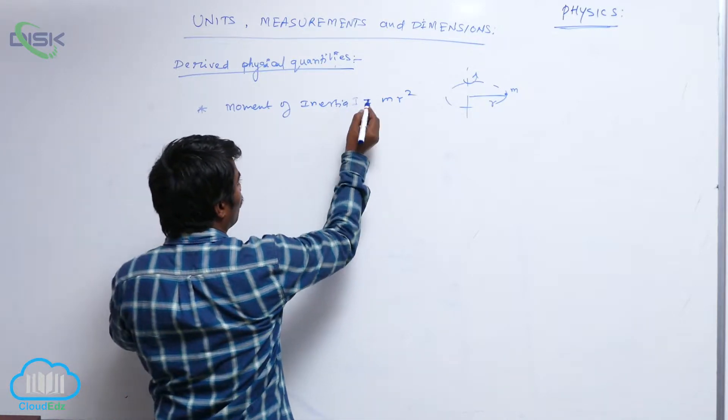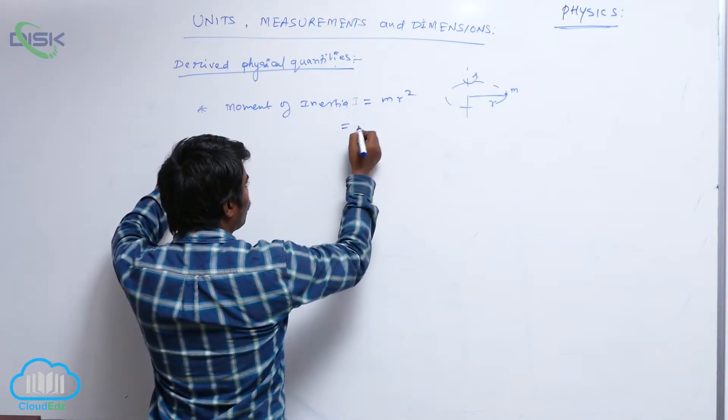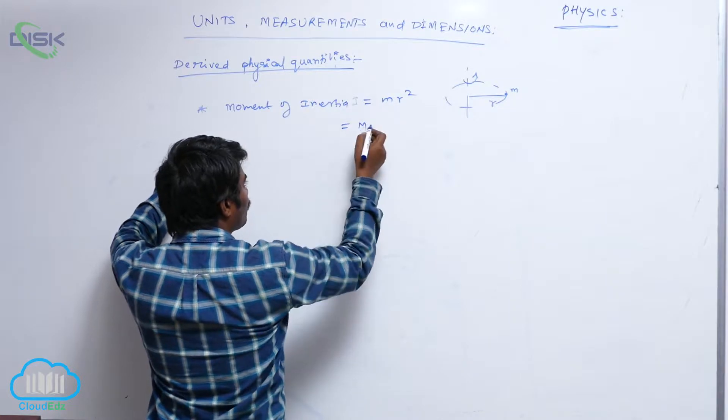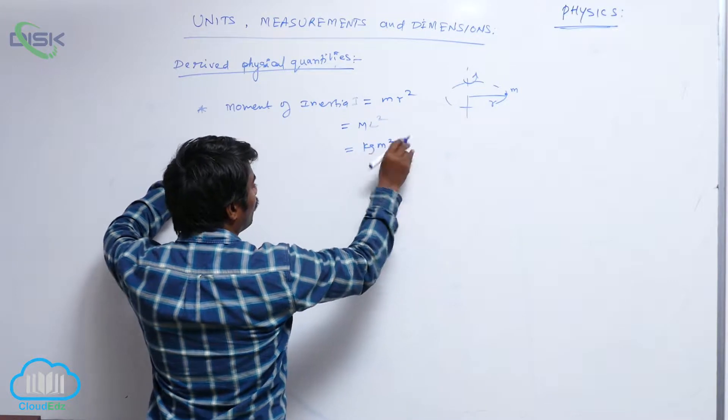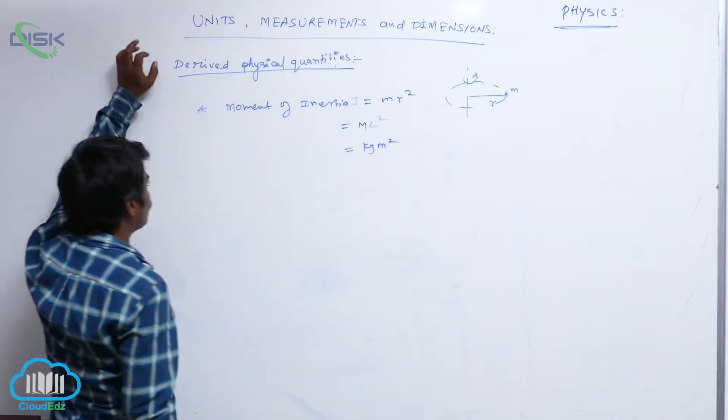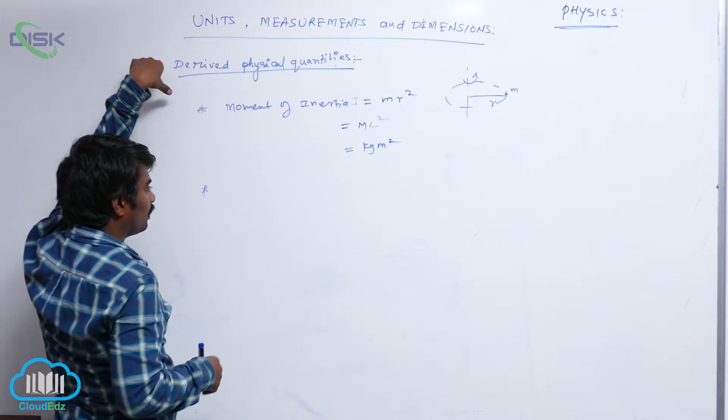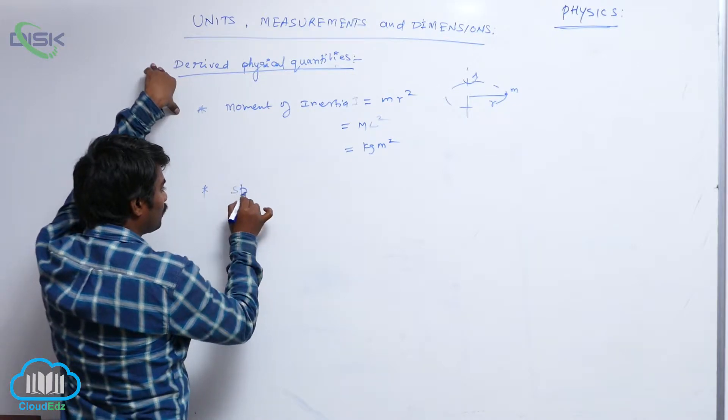We represent with capital I. Now its dimensional formula: mass, r is distance square, l square. Now the unit is kg meter square. Another formula is stress.